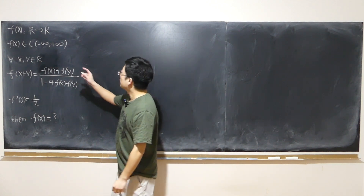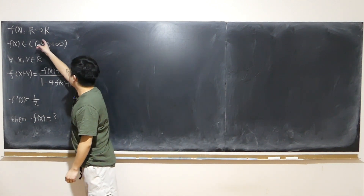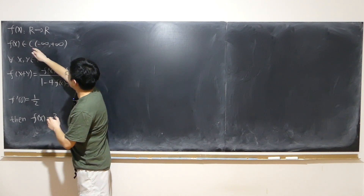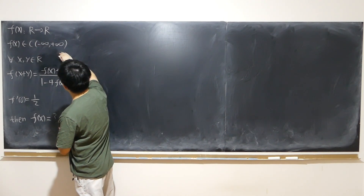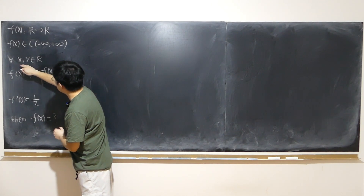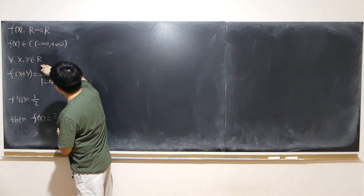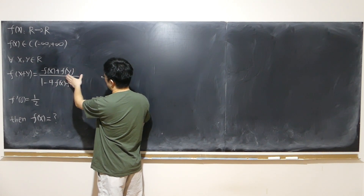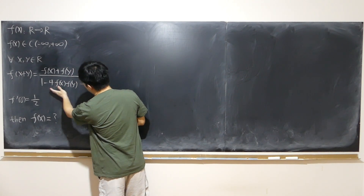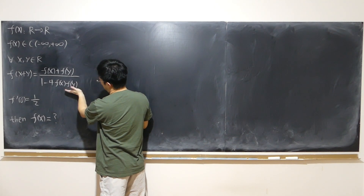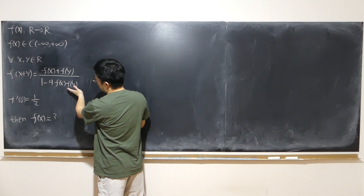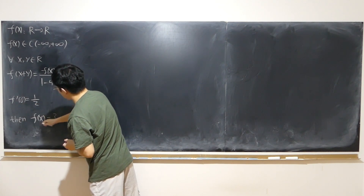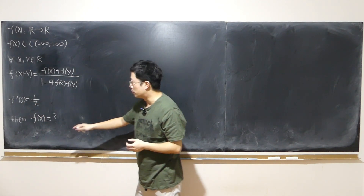We have a function whose domain and range are both real numbers, and it's given to be continuous over the entire number line. For any two variables x, y that are real numbers, we have f(x+y) equals f(x) plus f(y) over 1 minus 4 times f(x)f(y). Given that f'(0) is equal to one half, we want to find out the explicit form of f(x).